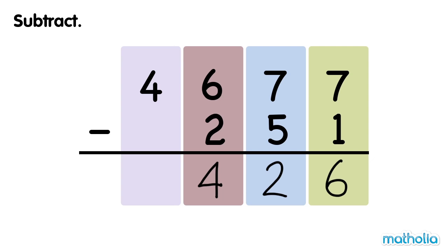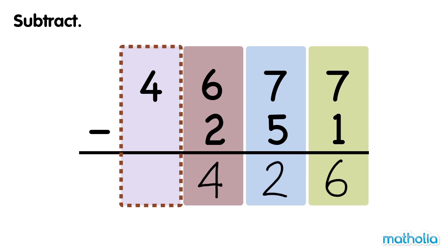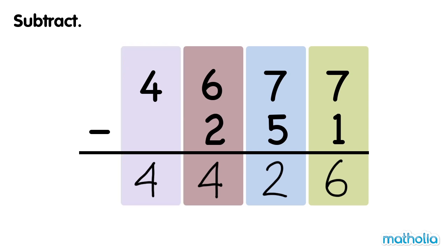Finally, subtract the thousands. 4 thousands minus 0 thousands equals 4 thousands. 4,677 minus 251 equals 4,426.